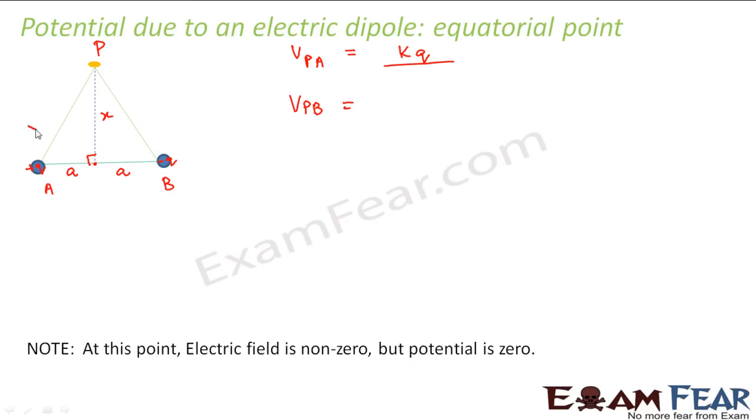This is a right angle triangle. So from Pythagoras theorem, this will be equal to root over x square plus a square. So similarly, this will also be equal to root over x square plus a square. So your potential at P due to A will be equal to kq divided by root over x square plus a square, that is the distance of this point from A.